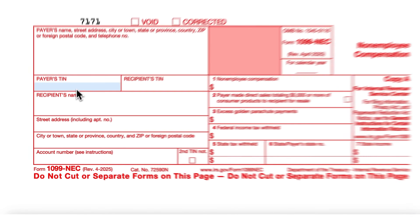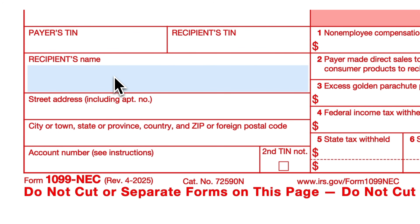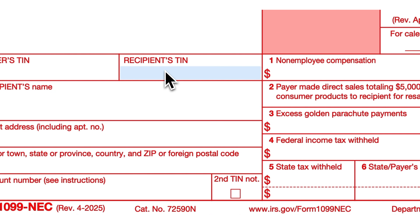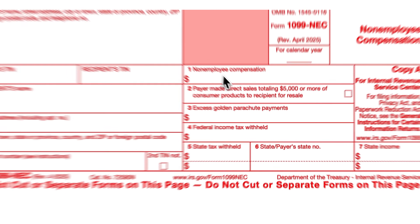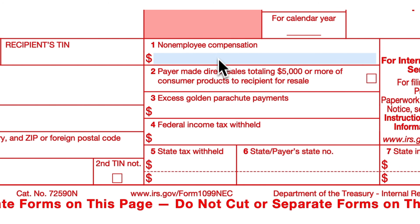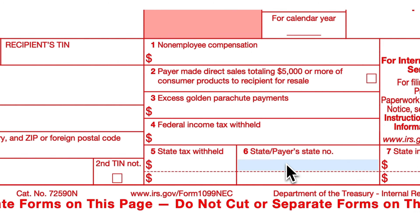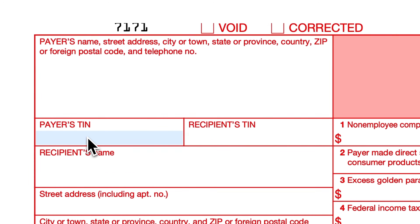Second, recipient details. For each contractor or vendor you paid $600 or more, you'll need their full legal name, address, and taxpayer identification number. Third, we will need to report the total non-employee compensation paid to each recipient and federal or state taxes withheld, if any. If your state requires reporting, have your state ID number on hand too — if you don't have it, don't worry, the system will auto-fill the payer information. Inputting these details is easy with Tax1099's smart interface, but double-check everything because errors can lead to IRS penalties.